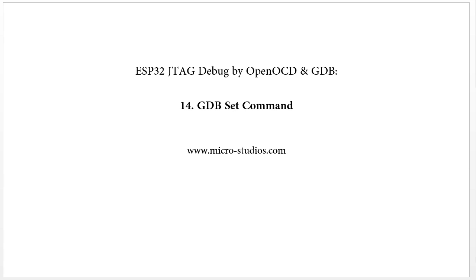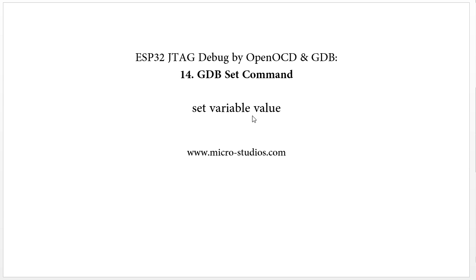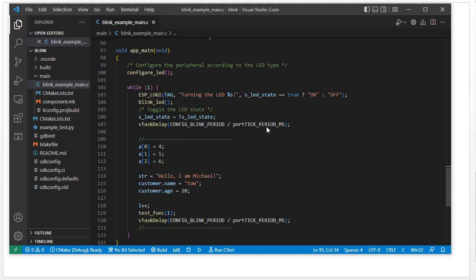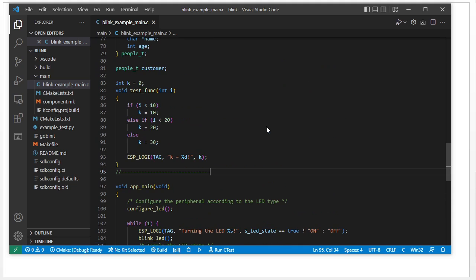Here we will focus on one important function: setting variable values. For variables, we have two types — code variables and environment variables. Let's take a look at how we do it using the code from previous lessons.